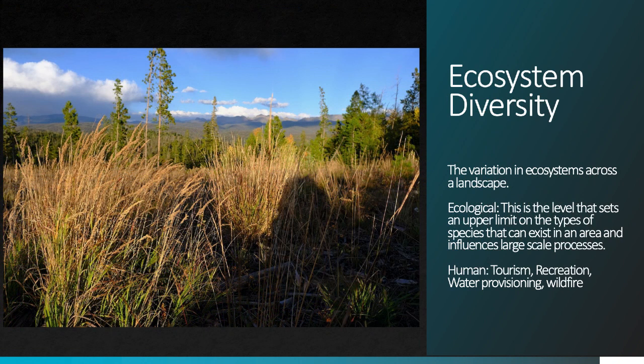The highest level of diversity we'll discuss here is ecosystem diversity, meaning variation in ecosystems across a landscape. You can probably imagine a large homogeneous landscape made up entirely of grassland or forest, which would have less ecological diversity than what you see in this photo, which includes grassland communities toward us, high alpine tundra in the far distance, and forests in between.